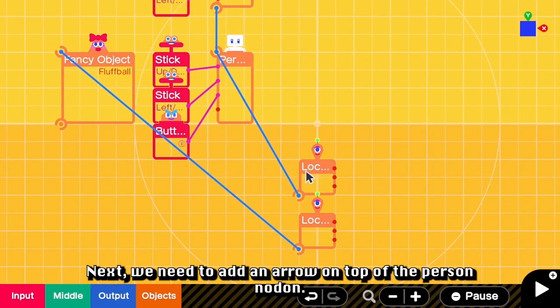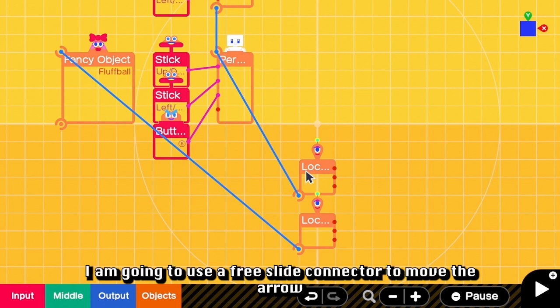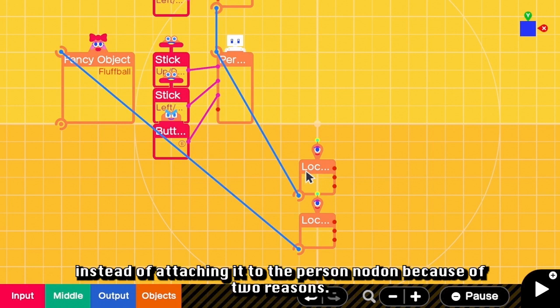Next, we need to add an arrow on top of the person Nodon. I'm going to use a free slide connector to move the arrow instead of attaching it to the person Nodon because of two reasons.